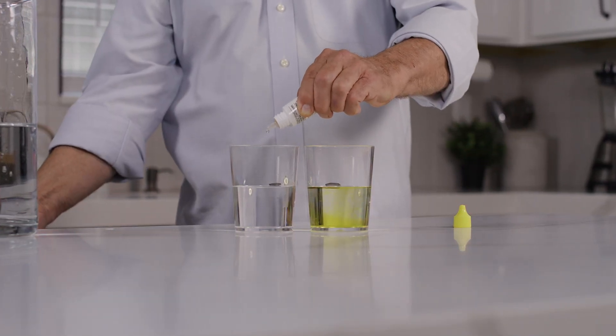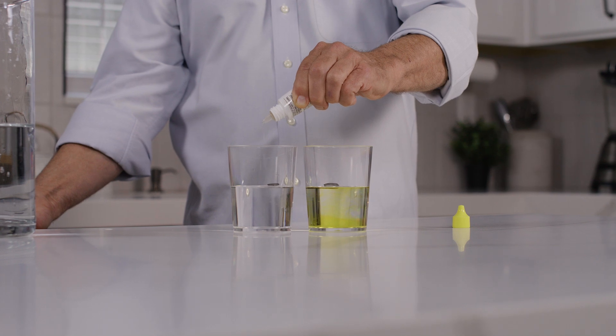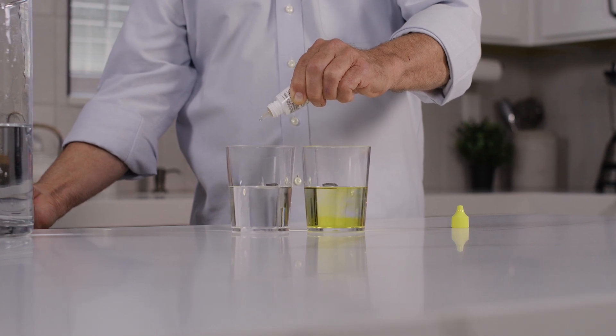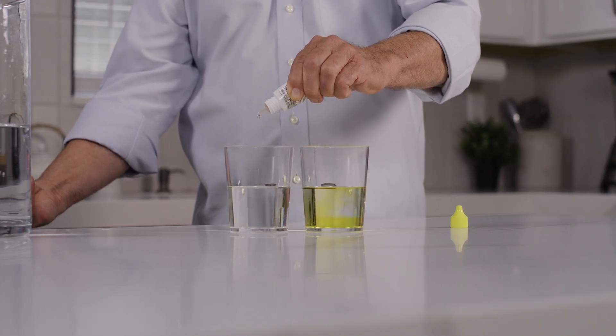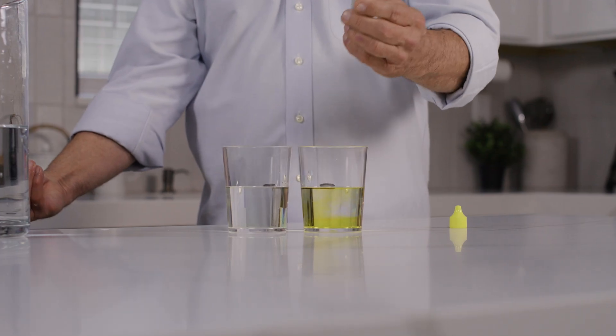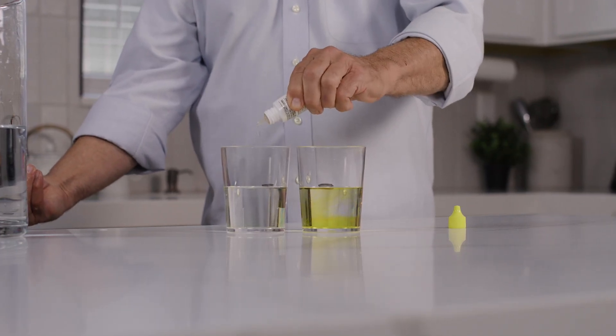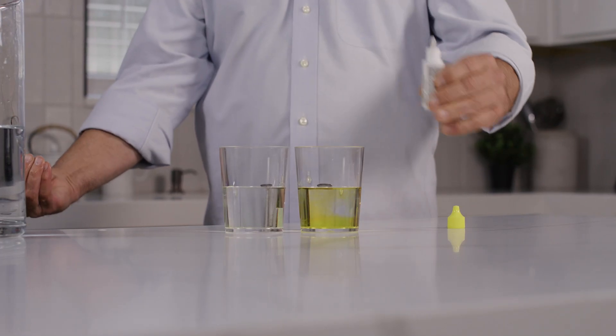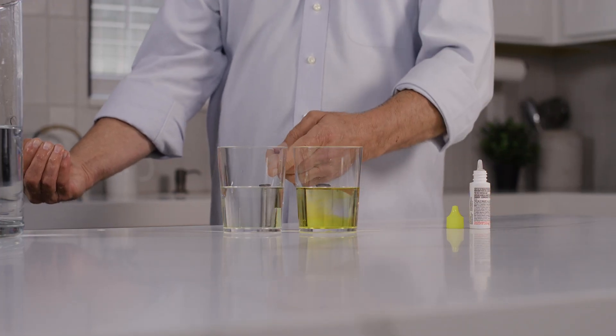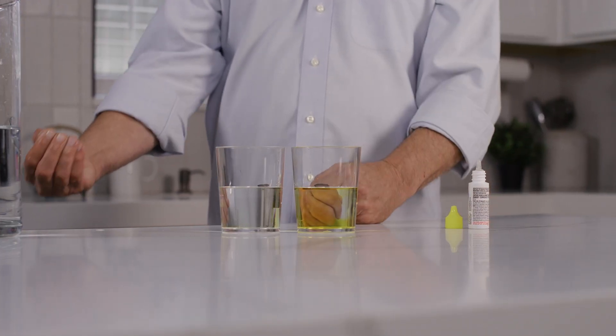Next, we'll use the same chlorine test drops on the second cup of unfiltered tap water that the hand was just in. In fact, he'll even add a couple extra drops of OTO to see if any chlorine at all can be detected. You can see the OTO chemical no longer detects chlorine in the water since the skin has absorbed the majority of it.